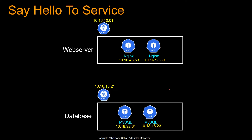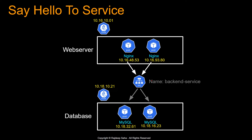So what is a service? A service is an abstract way to expose an application running on a set of pods as a network service. Let's try to understand it in a simpler way. Instead of these Nginx pods connecting to the MySQL pods using IP, they will connect to a construct called service.